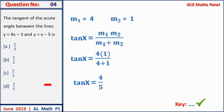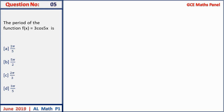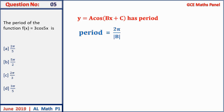Question 5: the period of f(x) = 3cos(5x). For a function of the form a·cos(bx) + c, the period is 2π divided by |b|. Here b = 5, so the period is 2π/5. The answer is A.